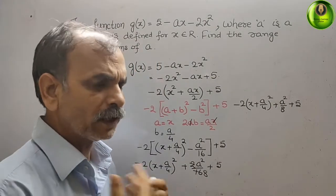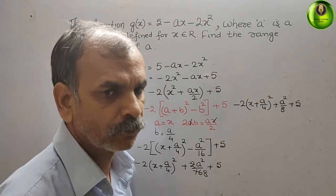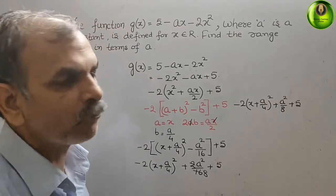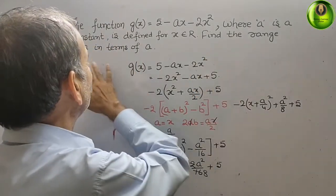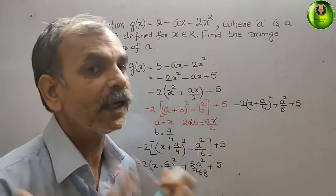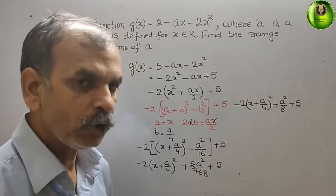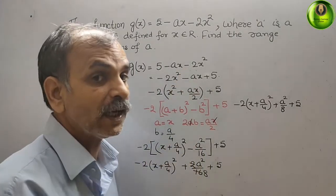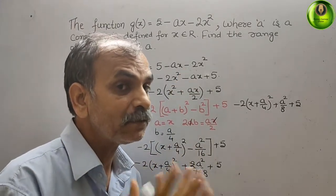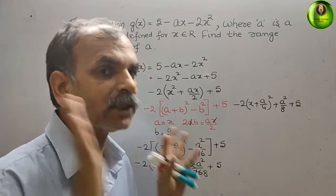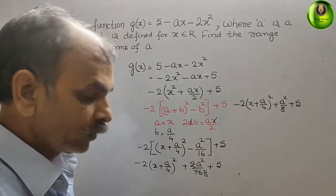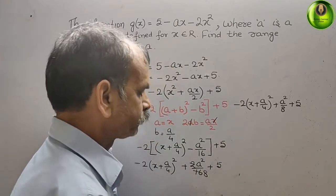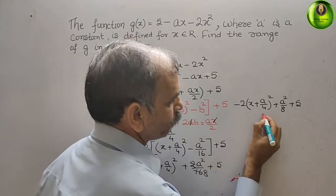You can solve further, but there is no need since they have asked to find the range of g in terms of a. The coefficient of x² is negative (minus 2), which means we will get a maximum point — the graph is an inverted parabola with a maximum point.